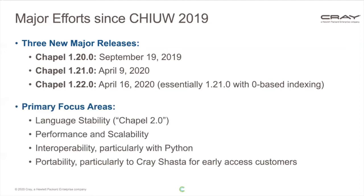For all of these releases, the primary focus areas were four things: the Chapel 2.0 language stability effort, improving Chapel's performance and scalability, improving interoperability particularly with Python, and improving portability — especially on Cray Shasta, our next-generation Cray system and architecture. We are now at the point where early access customers can run Chapel on Shasta systems.